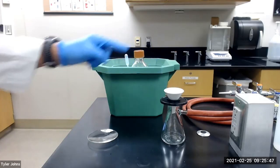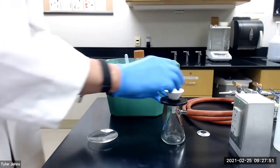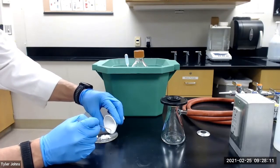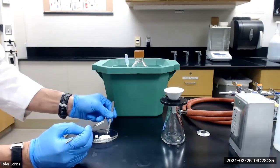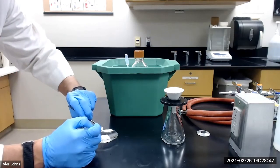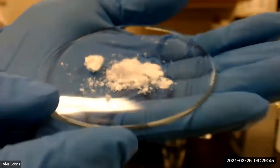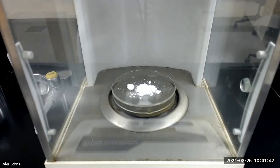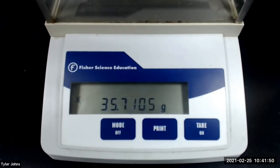We will next collect the crystals on the pre-weighed watch glass and then dry them for 30 minutes in an 80 degree Celsius oven. After drying, the mass of the pre-weighed watch glass and the purified product is 35.7105 grams.